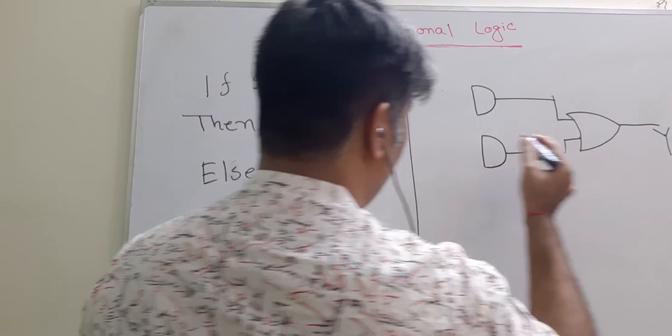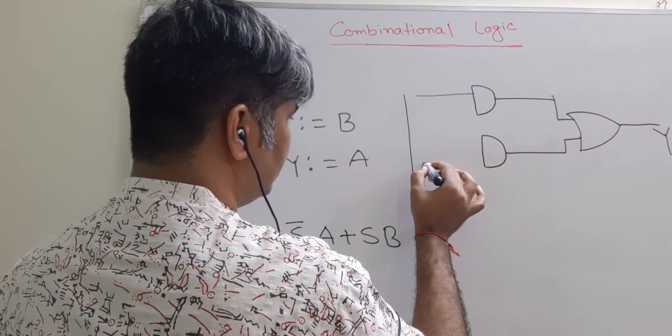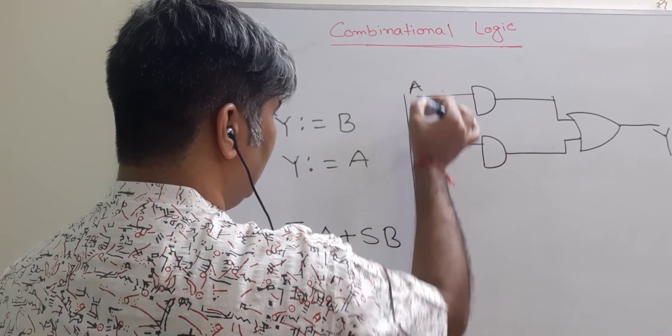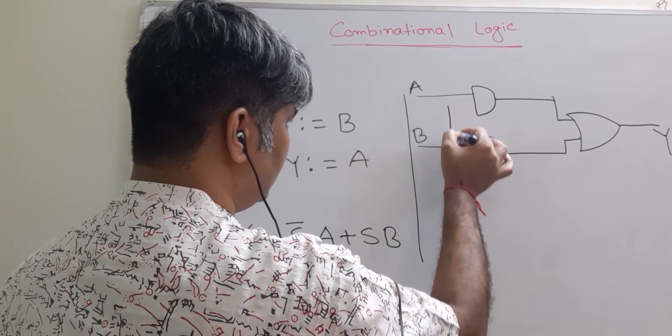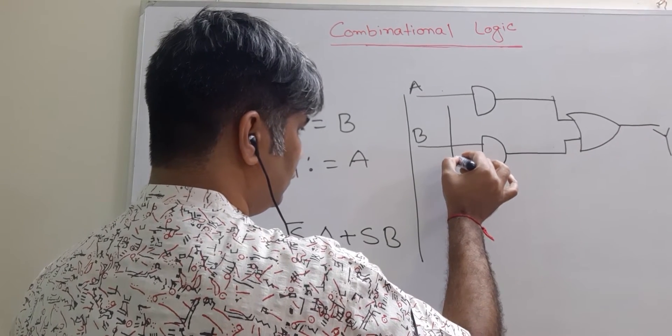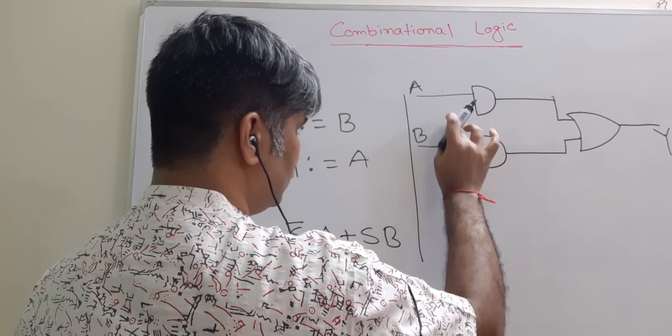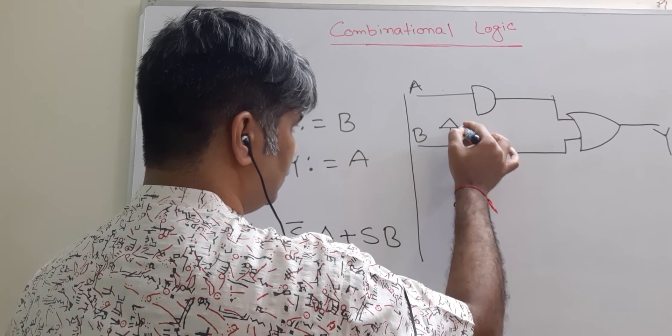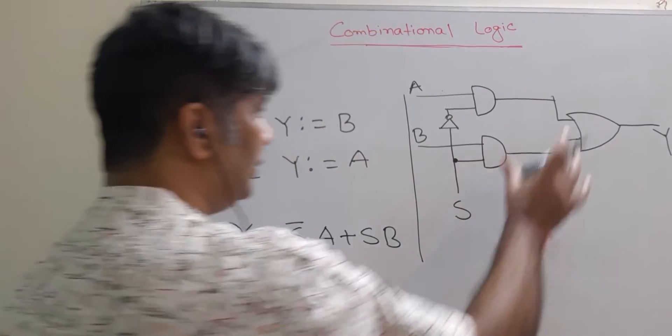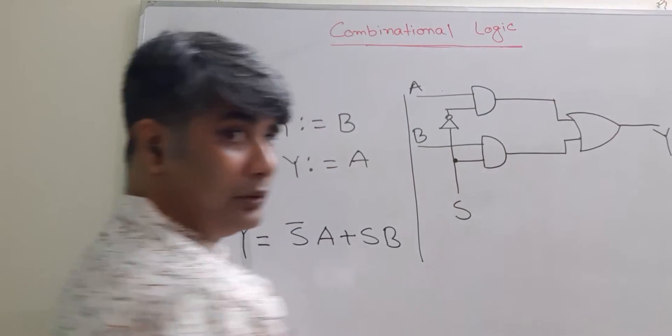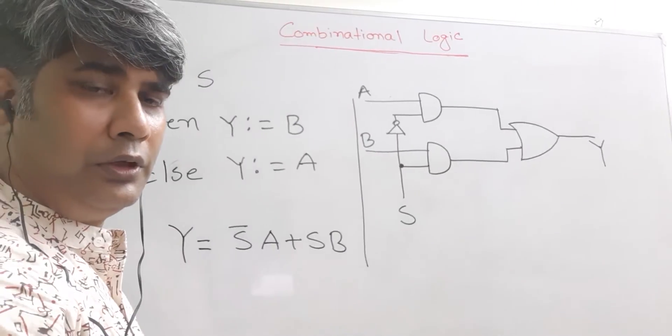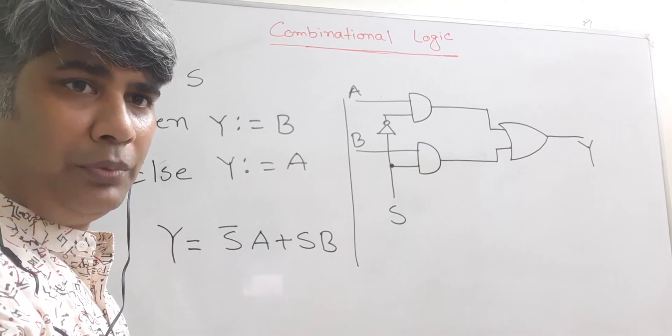So this one will be Y. This is A, this is B, and this one is S. Now you can see that—let me adjust the camera a bit.